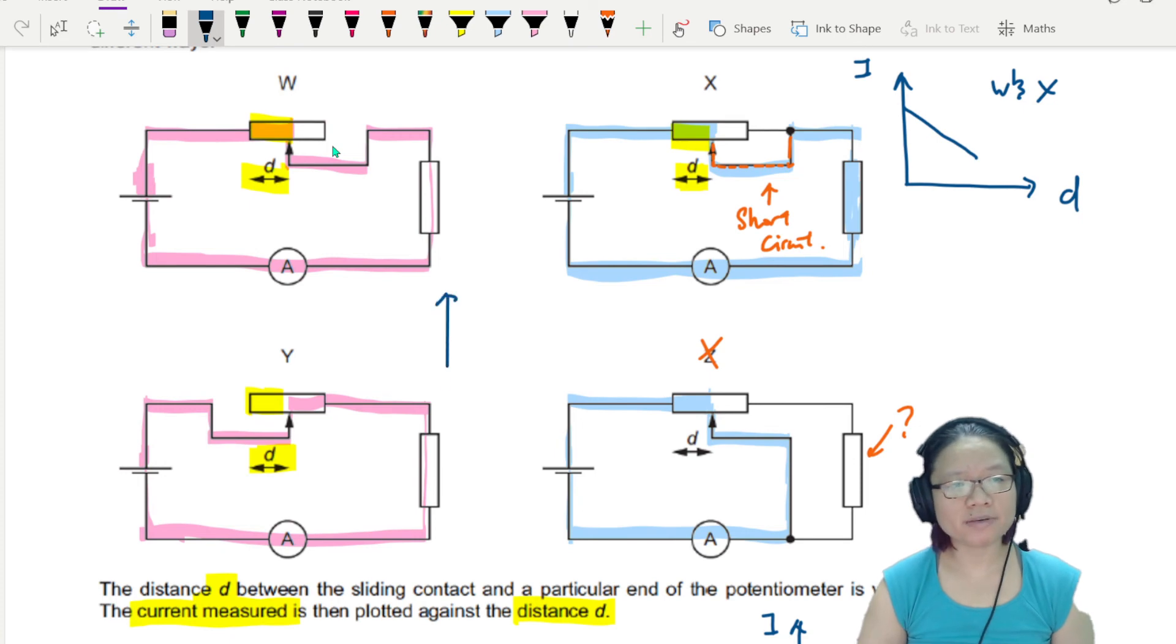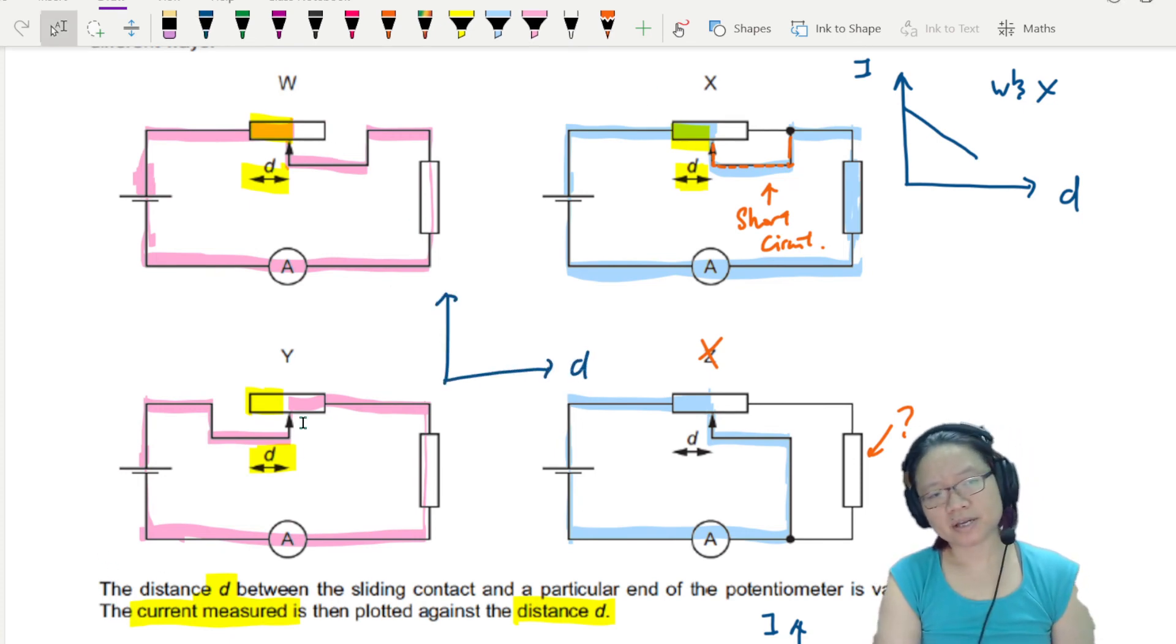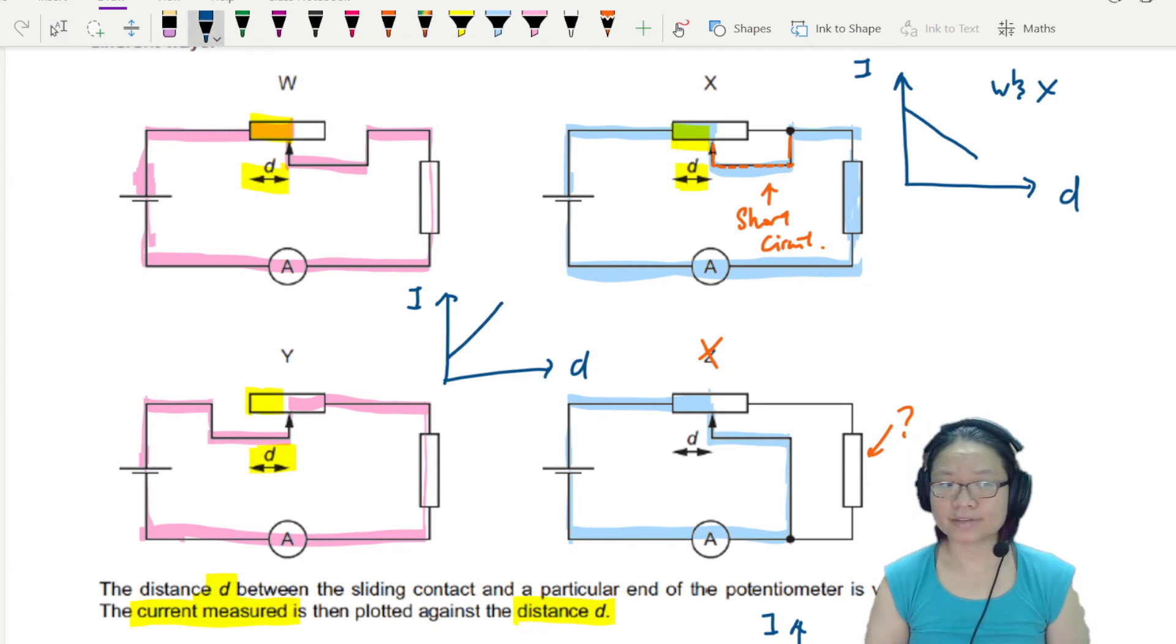Whereas for Y, as D increases, this pink color portion is shorter and shorter. So when D increase, current should increase. Something like this. This is for Y.